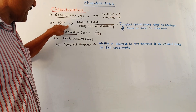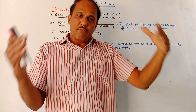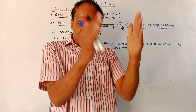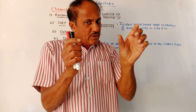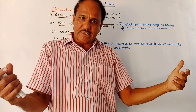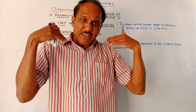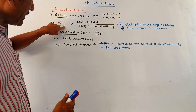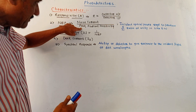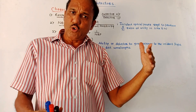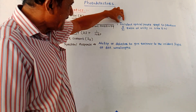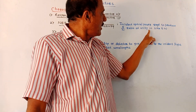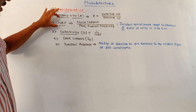Next is noise equivalent power (NEP). Whenever photons are falling, electron-hole pairs are generated and then separated. These generated charge carriers — electrons and holes — are random in nature and always produce fluctuations in the output current, generating noise current. NEP is the ratio of noise current to the peak radiant sensitivity. It can also be defined as the incident optical power required to produce a signal-to-noise ratio of unity in a 1 Hz bandwidth.